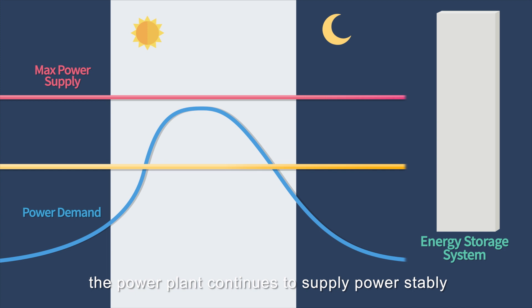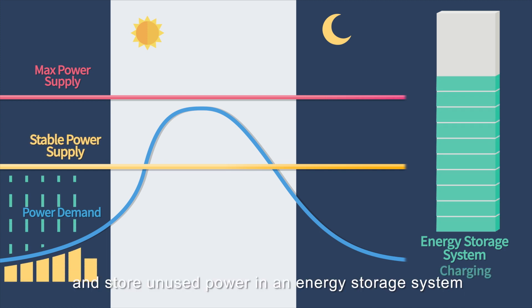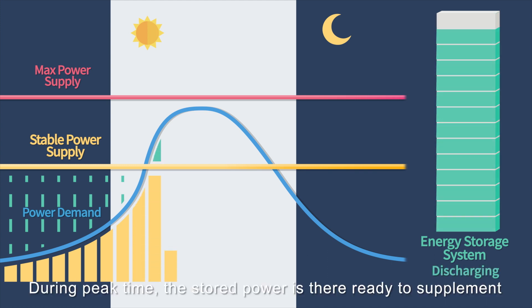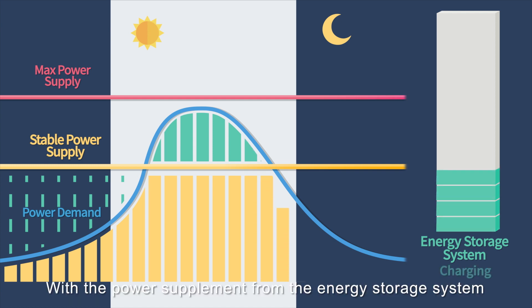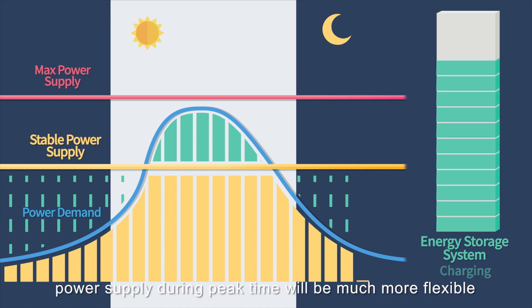During off-peak time, the power plant continues to supply power stably and store unused power in an energy storage system. During peak time, the stored power is there ready to supplement. With the power supplement from the energy storage system, power supply during peak time will be much more flexible.